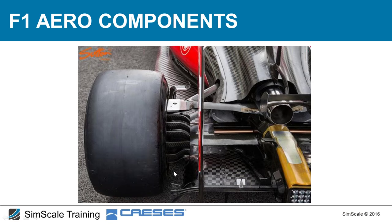These elements create upwash to prevent too much air from entering the region between the rear tire and the floor, keeping that region clean and controlled. The fin further upstream creates the vortex that seals the diffuser in the region between the rear tire and the diffuser.